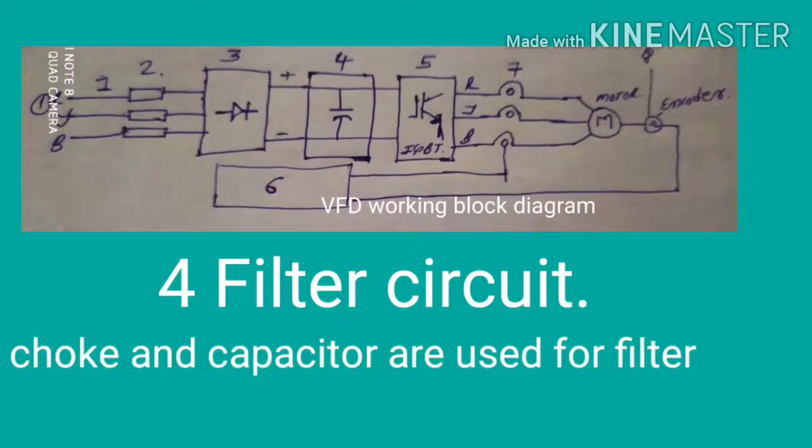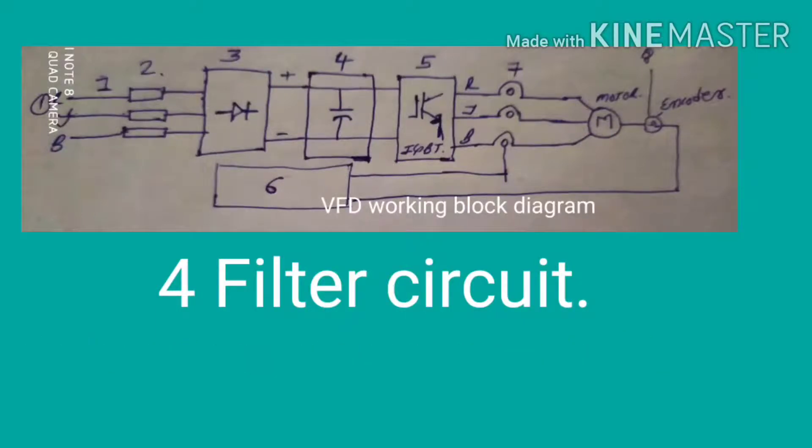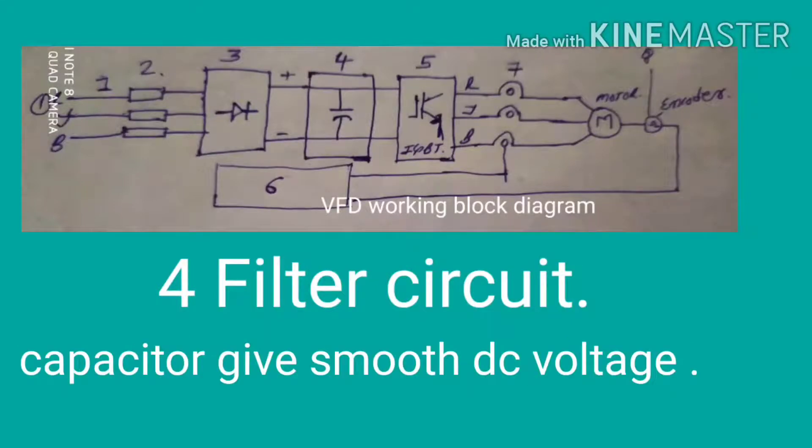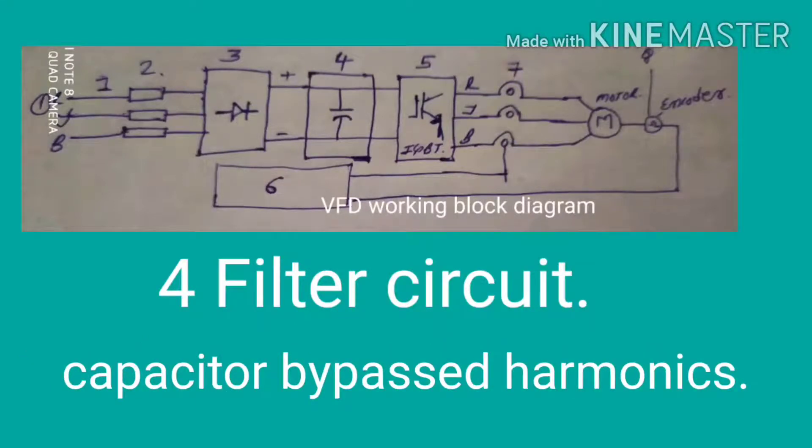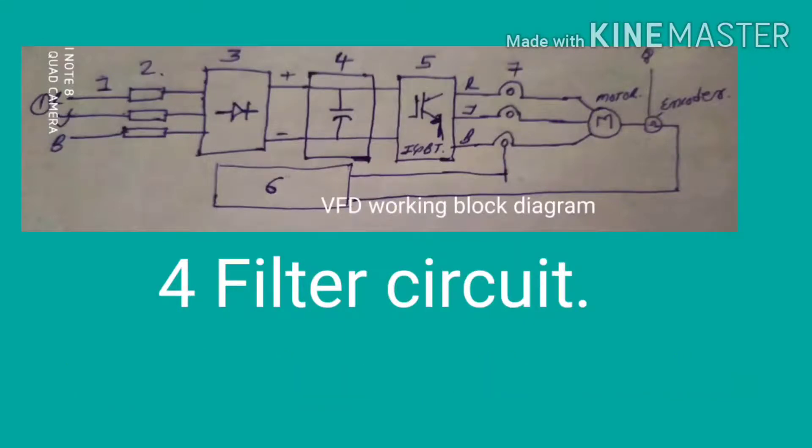In the filter circuit, choke and capacitor are used for filter purpose. The choke and capacitor filter the harmonics and unnecessary AC supply which has come into the DC supply. Filter circuit bypasses all the harmonics and gives smooth filtered DC supply to the fifth block.